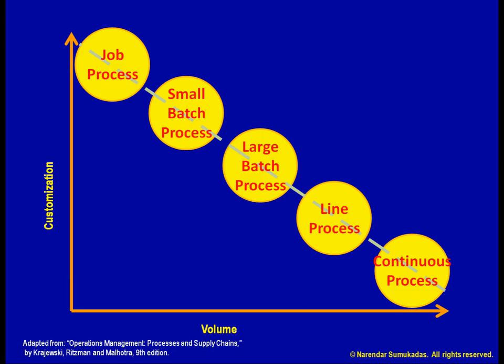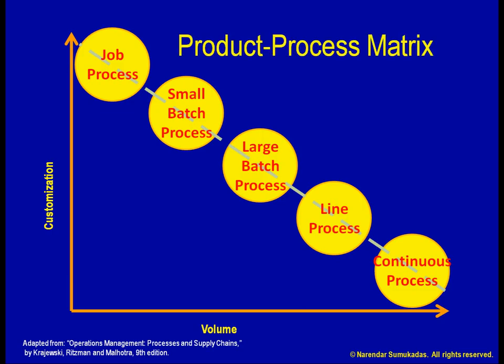This diagram is called the product-process matrix. It applies to manufacturing processes. The job shop process employs a flexible flow pattern. The small and large batch processes employ an intermediate flow pattern. The line and continuous processes employ a line flow pattern.